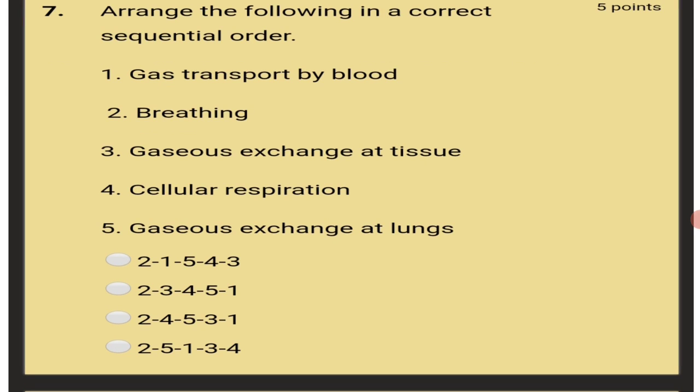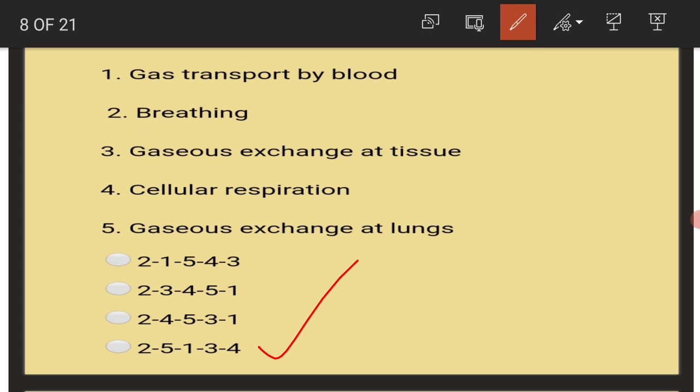Arrange the following in a correct sequential order: Breathing, followed by gaseous exchange at lungs, followed by gas transport by blood and gaseous exchange at tissue, ultimately cellular respiration. So the answer is 4.